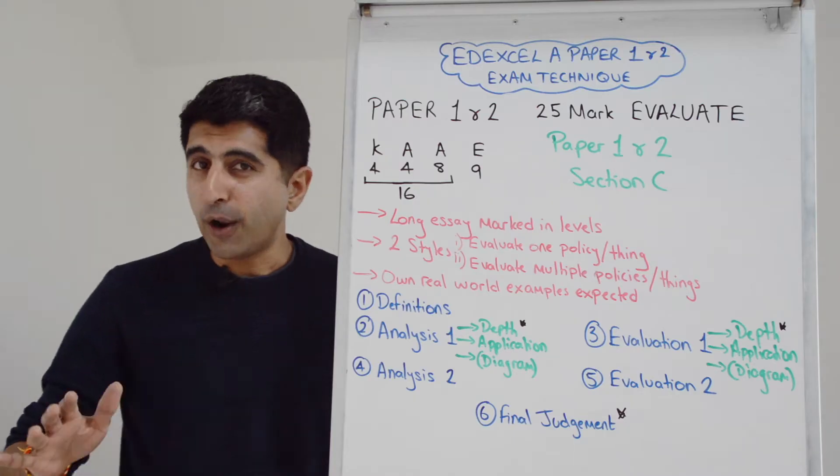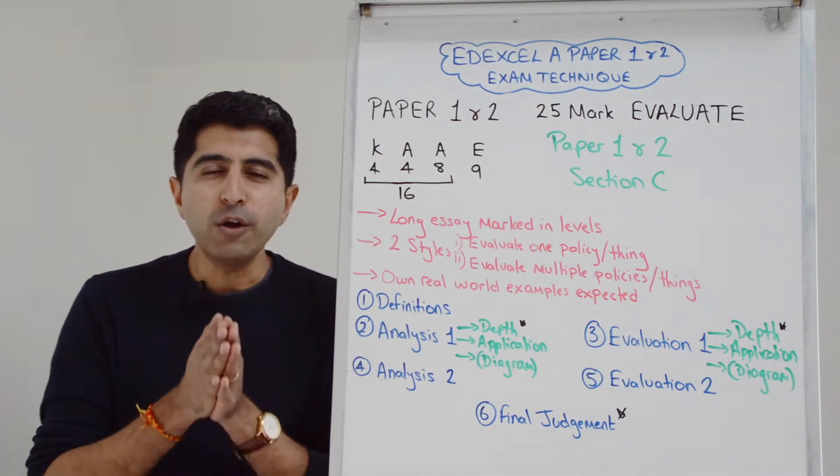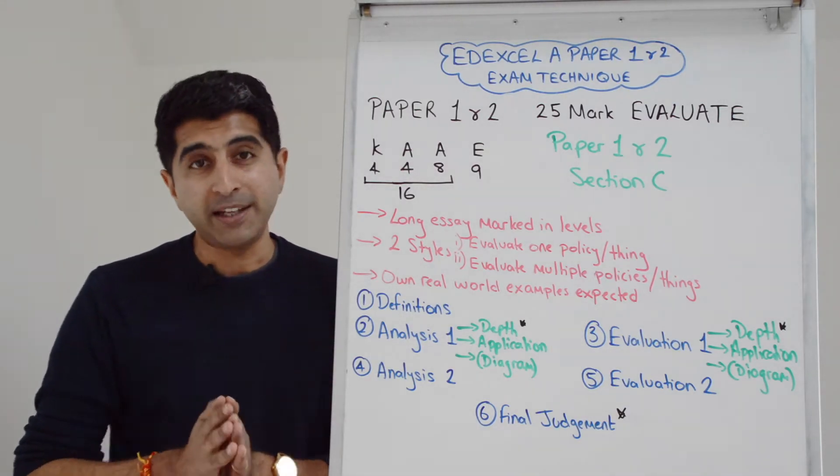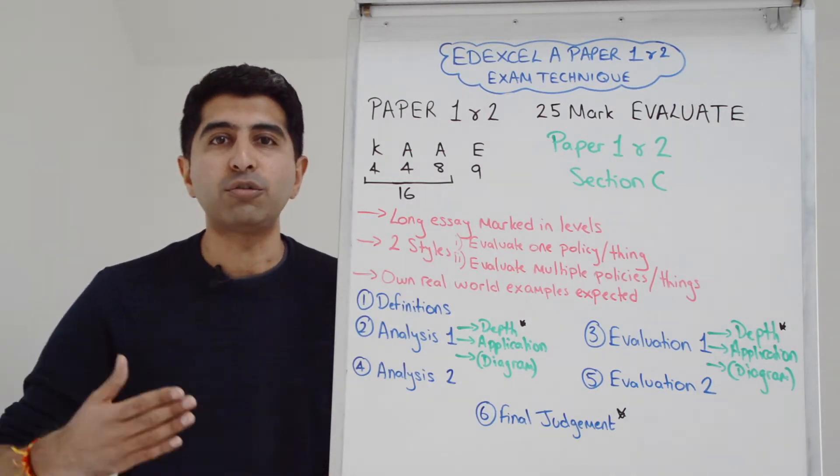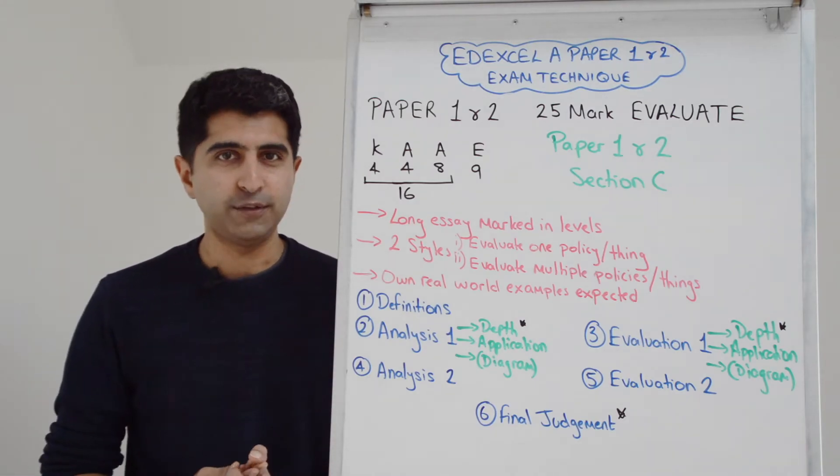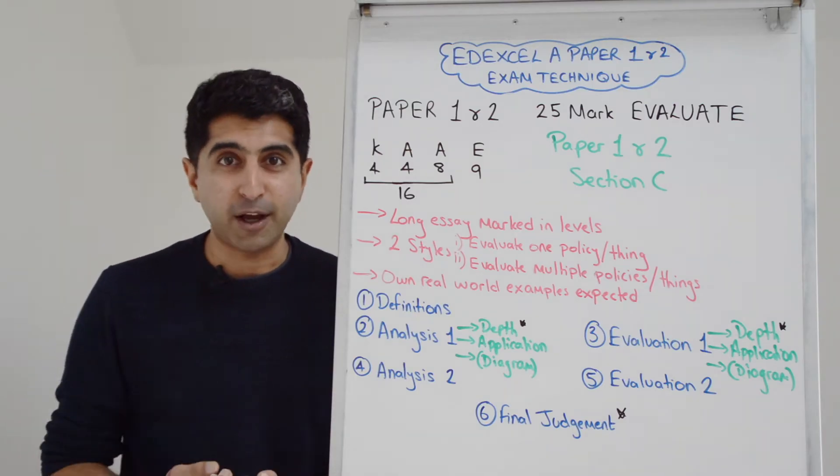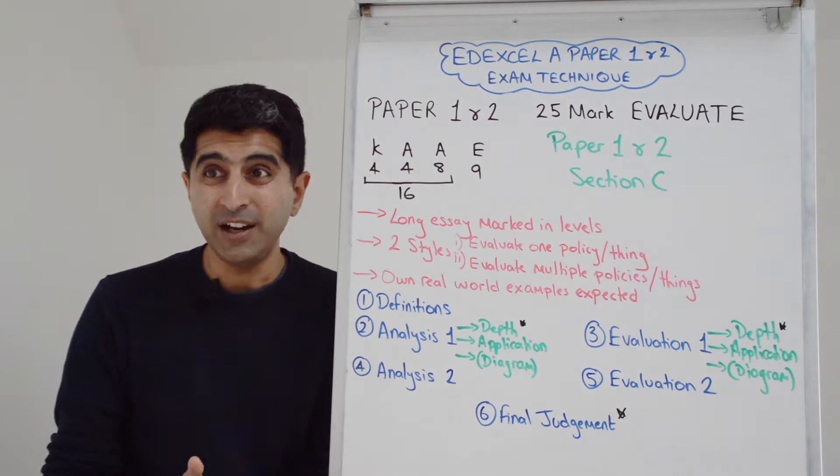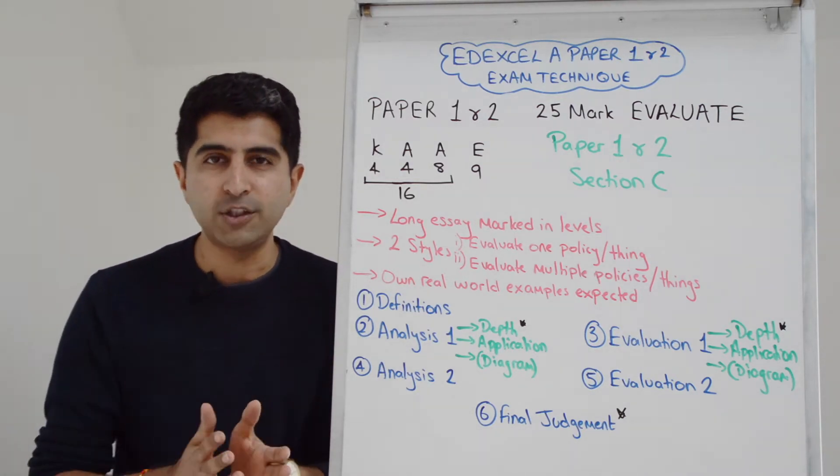Bear in mind that you don't have extracts here in paper one and paper two for the 25. Your own real world examples are absolutely crucial and very much expected. Often the 25 marker will say using an industry of your choice, a market of your choice, a developing country or developed country of your choice.